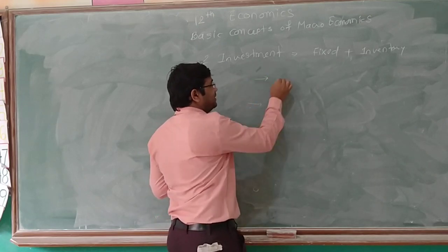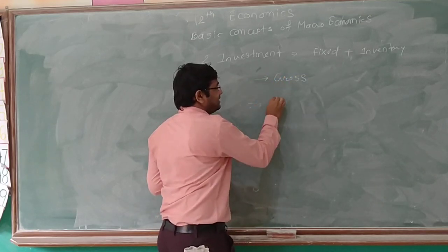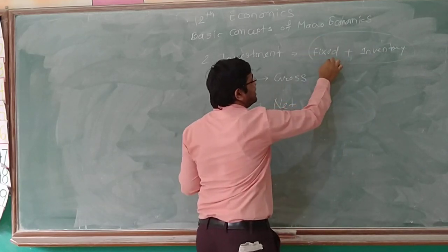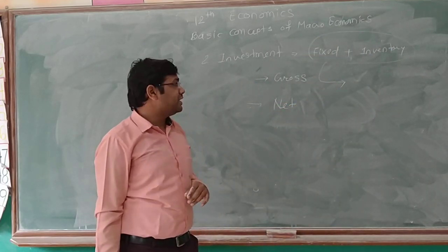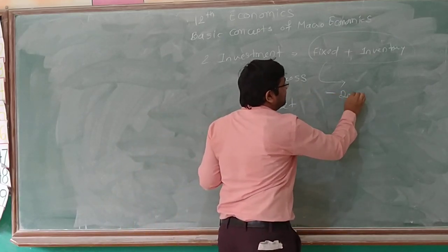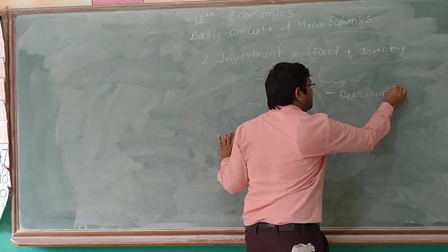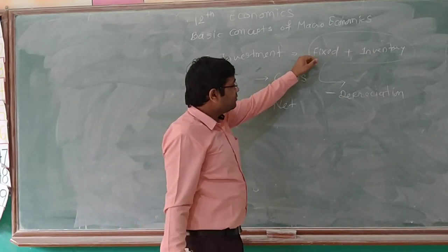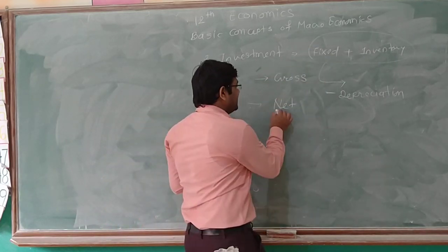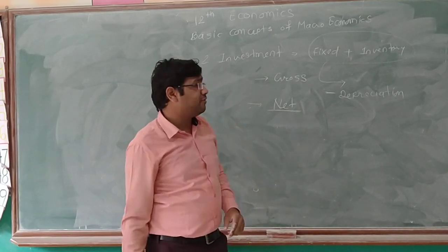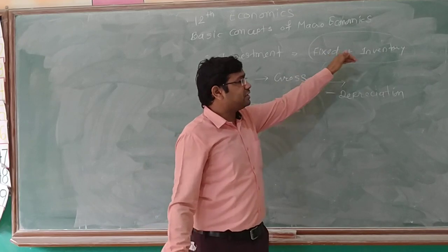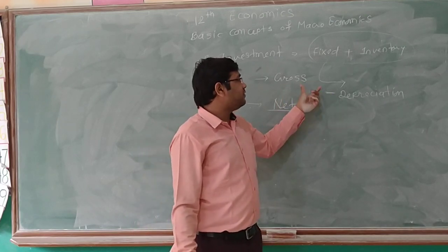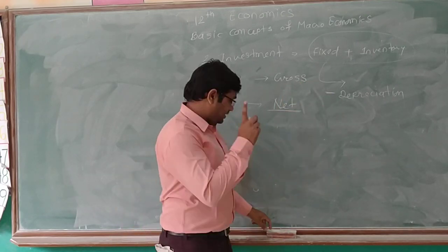Investment can be of two categories. The first is gross investment and the second is net investment. Gross investment means if we directly sum up the fixed assets and inventory addition in a year, that is known as gross investment. But if we reduce depreciation — the amount decrease due to normal wear and tear of an asset — from the gross amount, we get the net investment. So gross investment is the total amount spent on fixed assets and inventory without reducing depreciation, and net investment is gross investment minus depreciation.